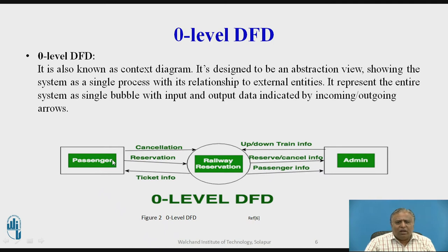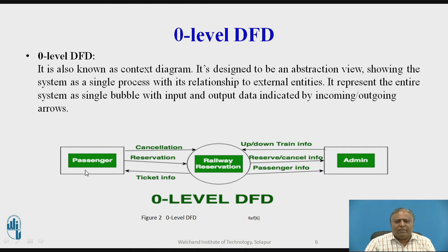In this diagram, the passenger makes the reservation. The reservation information is given to the administrator, who checks passenger information and availability of the reservation, along with train information. Then the administrator provides ticket information to the passenger. Cancellation can also be done by the passenger toward the railway reservation system, handled by the administrator. The whole system is shown in the middle circle, with passenger and admin shown in rectangles, and arrows representing the data flow.